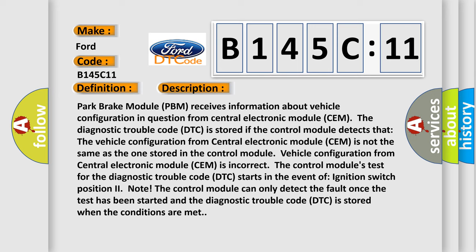Vehicle configuration from Central Electronic Module SEM is incorrect. The control module's test for the diagnostic trouble code DTC starts in the event of ignition switch position 2. The control module can only detect the fault once the test has been started, and the diagnostic trouble code DTC is stored when the conditions are met.